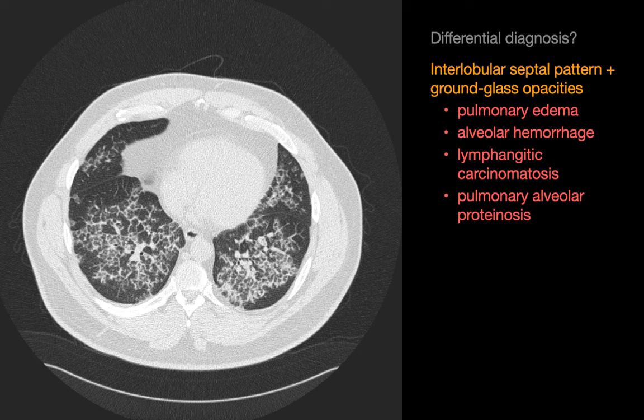Pulmonary edema can be cardiogenic or non-cardiogenic. Examples of non-cardiogenic edema that can look like this include most of the situations that can cause capillary leak pulmonary edema. So I'd keep things like acute lung injury, TRALI, and drug-induced lung injury in mind, in addition to CHF.